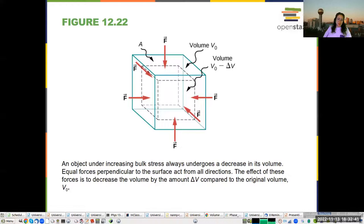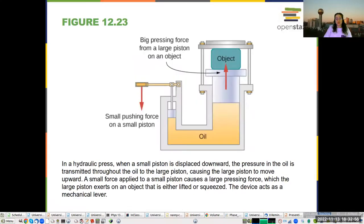And objects under bulk stress tend to always decrease the volume, and the forces perpendicular to the surface act from all directions. So the net effect is to change the total volume. So here you can see an example.